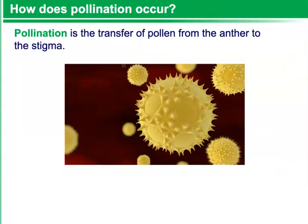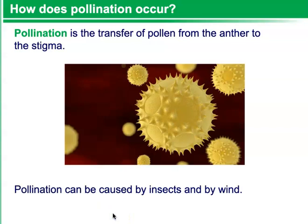So how does pollination occur? Pollination is the transfer of pollen from the anther to the stigma. Pollination can be caused by insects and by wind.